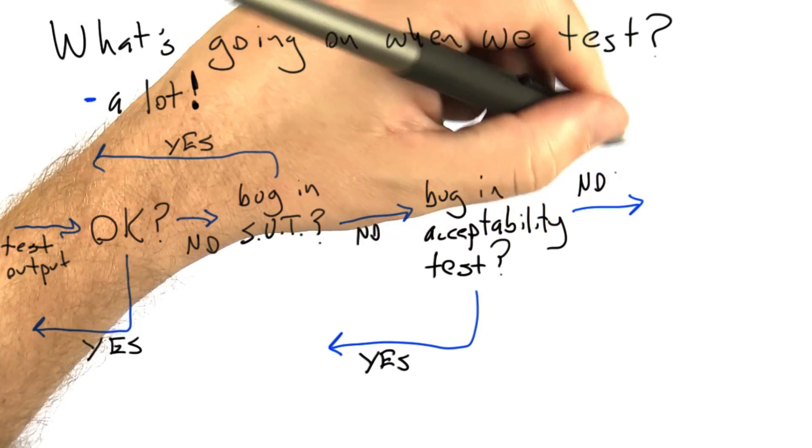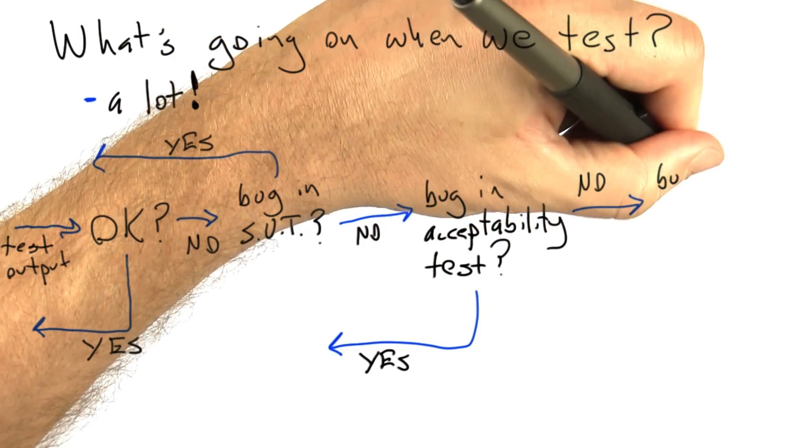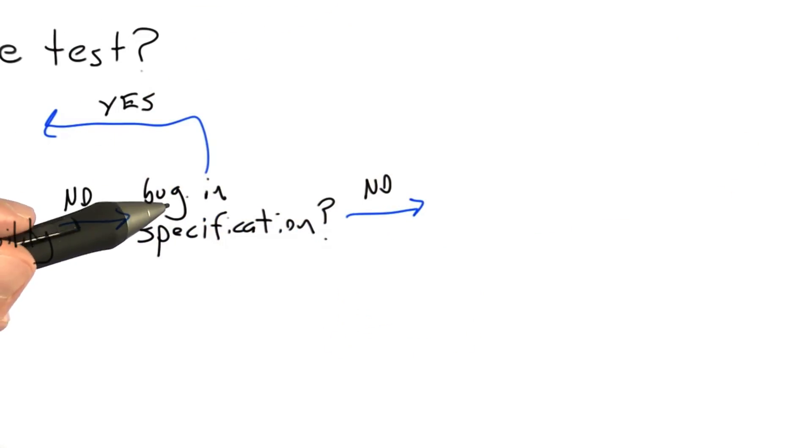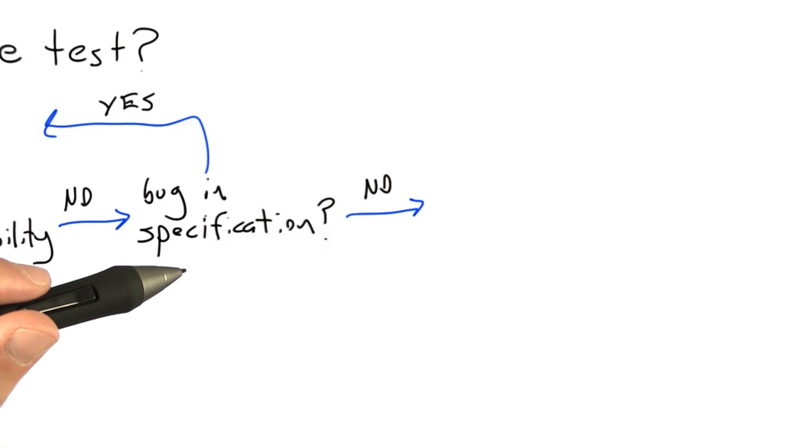If not, we should consider the possibility that there might be a bug in our specification. It's often the case that debugging the specification is a fairly large part of debugging, because the specification often is not written down or it's not written down particularly formally. It's just an English document or an understanding among a group of people. And very often we're learning what it is that we needed to implement as we're implementing the software.